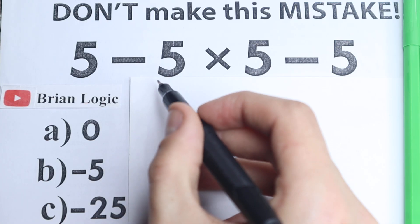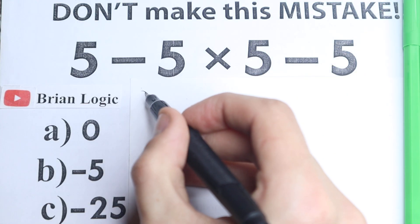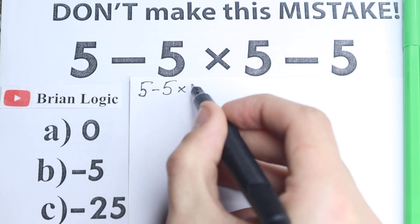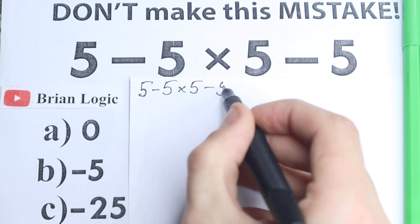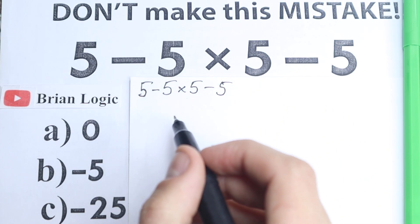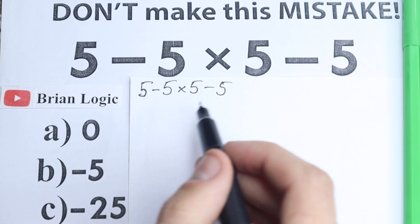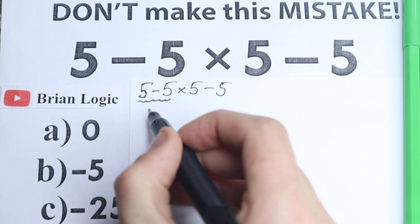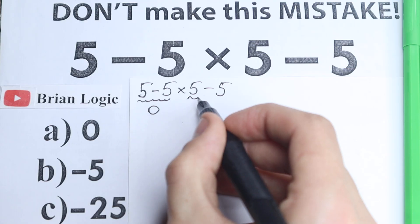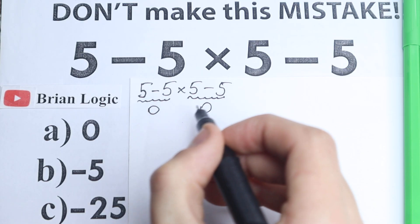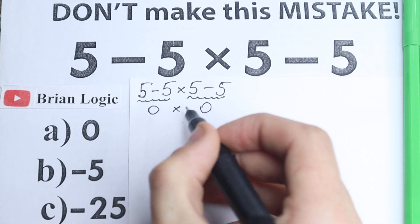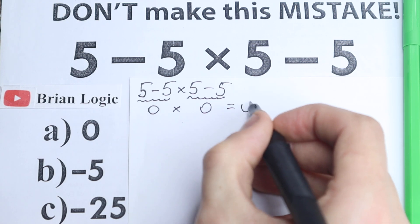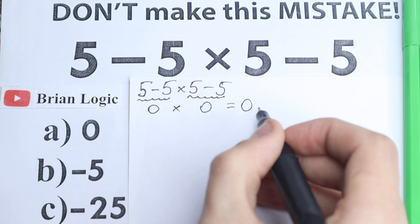Let's start with a common wrong solution. We have 5, minus 5, times 5, and minus 5. Most people look at this and say: 5 minus 5 equals 0 on the left-hand side, and 5 minus 5 on the right-hand side also equals 0, so this multiplication in the middle gives 0 times 0 equals 0 — that's Option A.